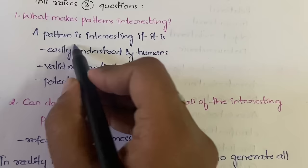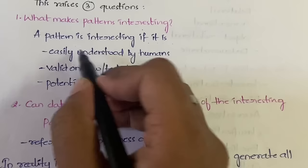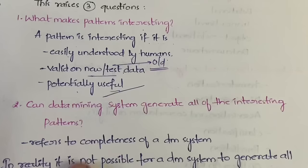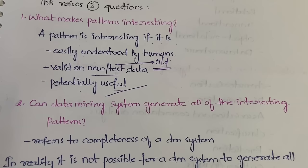A pattern is interesting if it meets three criteria. First, it is easily understood by humans — every human being has to easily understand the pattern. Second, it is valid on both new and old test data. Third, it is potentially useful for the user — it has to fulfill the needs of the user.